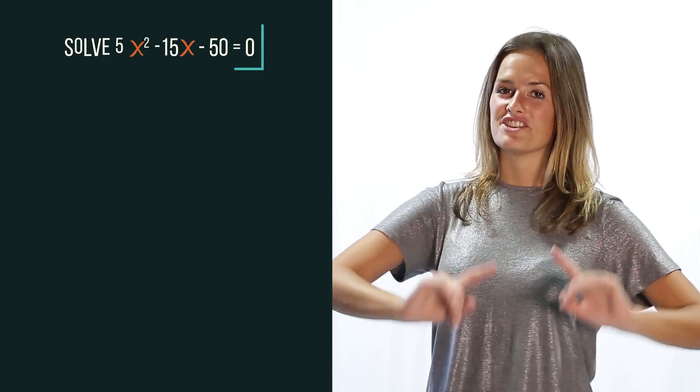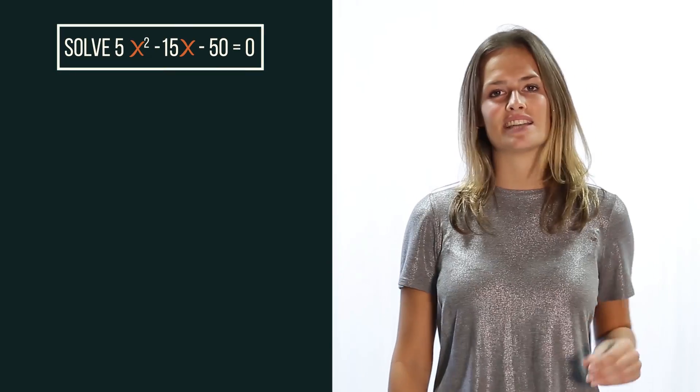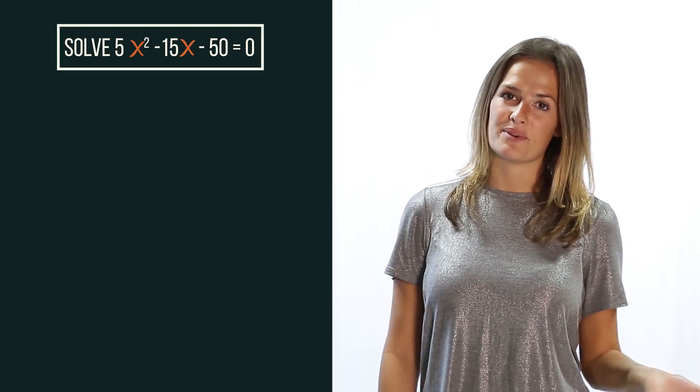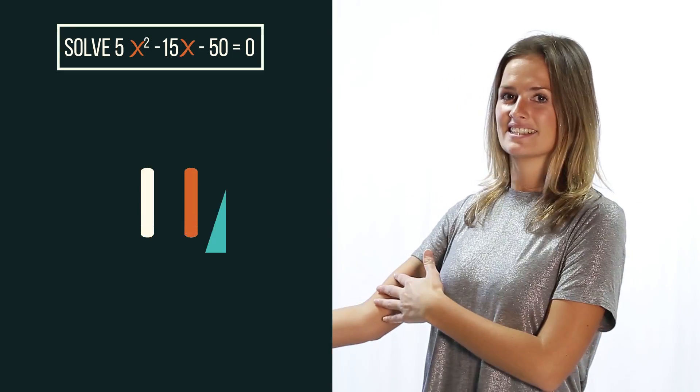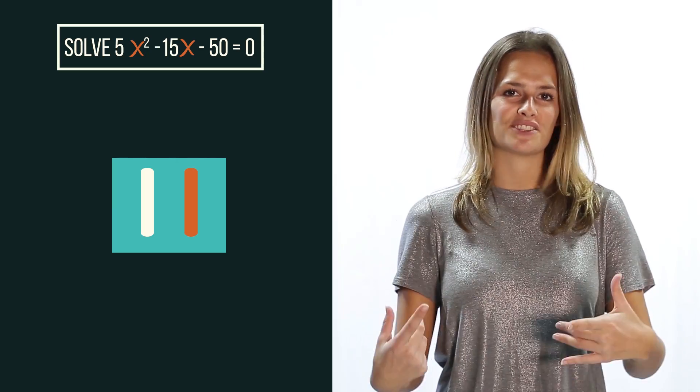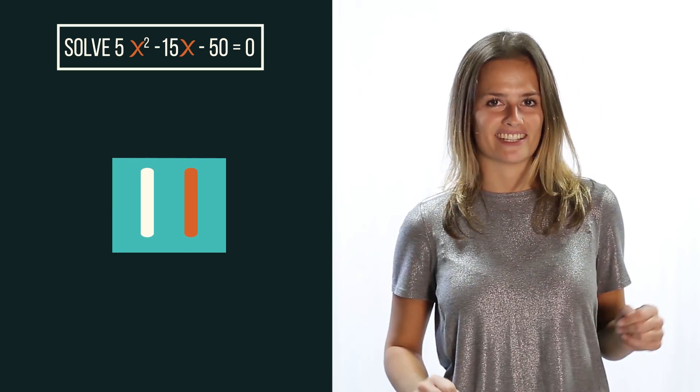So here's one for you to do. Remember to start by factoring out 5 from the 5x squared and the negative 15x. Pause the video, complete the square and click play when you're ready to check.